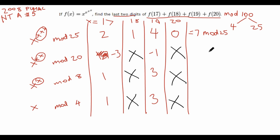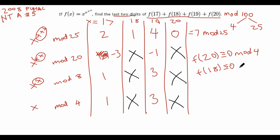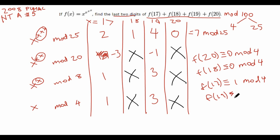Now we can do the easier part, which is mod 4. f(20): 20 is 0 mod 4, so 20 to any power is 0 mod 4. f(18): 18 squared is 0 mod 4, so f(18) is also 0 mod 4. f(17): 17 is 1 mod 4, so 1 to the 1 to the 1 to the 1 is 1 mod 4. f(19): 19 is -1 mod 4, so (-1) to the (-1) to the (-1) is -1 mod 4. Adding them together: f(17) + f(18) + f(19) + f(20) = 0 mod 4.